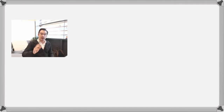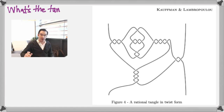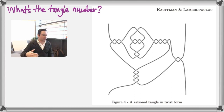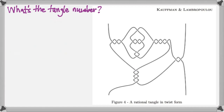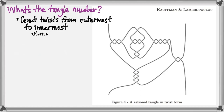So how do we turn a rational tangle into its associated rational number? I want to start with this example of a tangle from the Kauffman and Lambropoulou paper. It's a really juicy tangle because it's got a lot of action and it's going to help us illustrate all of the different steps in building the continued fraction representation for the tangle number. What we're going to do is look at this tangle and count the twists from the outermost parts to the innermost parts.